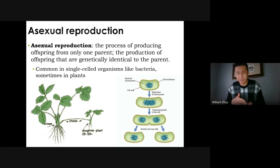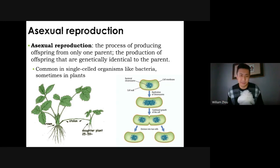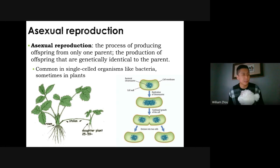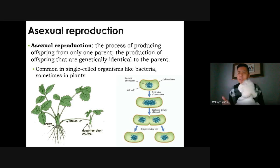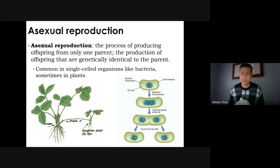Asexual reproduction has a lot of advantages — it's very safe and easy to do. You just need yourself and some nutrients. You're not at risk of being killed or not finding a partner, so you can always do it when the time comes. It's very convenient.